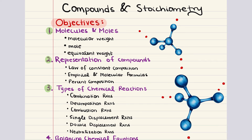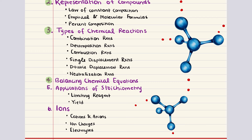Then we move into the fourth objective where we will learn how to balance chemical equations. It's going to be super important that we master this because it will set us up for success in the chemistry portion of the MCAT. The fifth objective is about applications of stoichiometry — identifying limiting and excess reagents and calculating percent yield. The last objective is titled ions, covering nomenclature rules and a brief discussion on electrolytes.